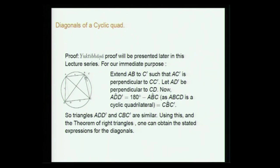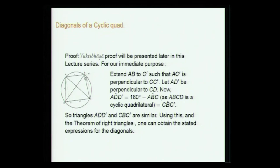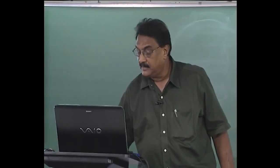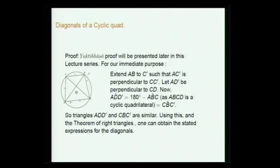This angle equals that angle, and one angle is 90° in each triangle. So triangles ADD' and CBC' are similar. Using this and the theorem of right triangles one can obtain the stated expression for the diagonals. Essentially, AC² = CC'² + AC'², and CC'² = BC² − BC'², and BC' = AC' − AB. Using these expressions it is a bit of algebra only — no great concept — and you get two expressions for AC. Equating these, using similar triangles, gives the result.